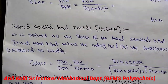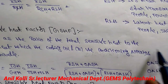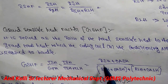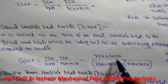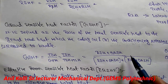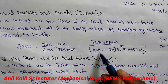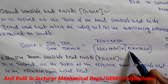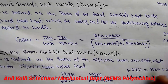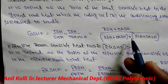Next, grand sensible heat factor. It is defined as the ratio of total sensible heat to the grand total heat. Grand sensible heat factor equals room sensible heat plus outside air sensible heat (OSH). In any air conditioning process, air from outside also enters the room, so we observe its sensible heat. OSH means outside air sensible heat, and OLH means outside air latent heat.